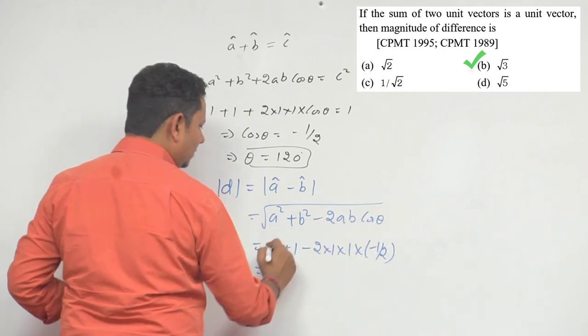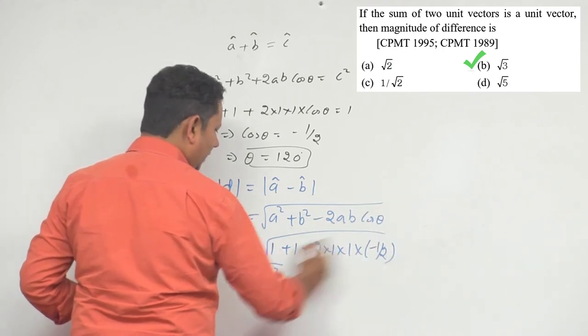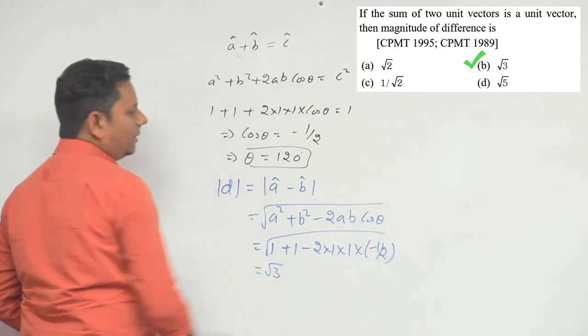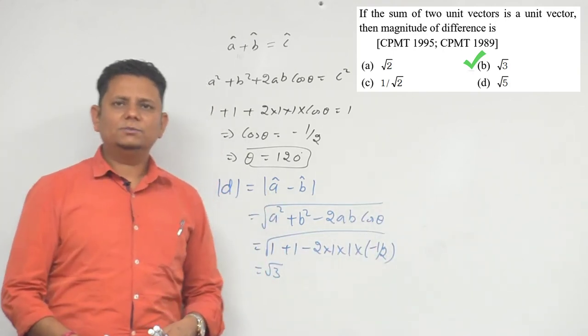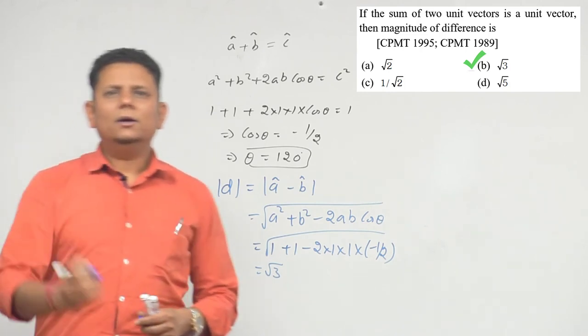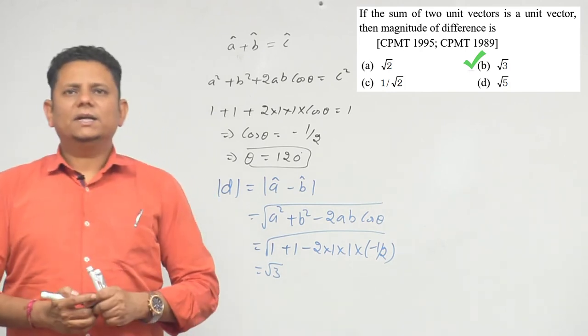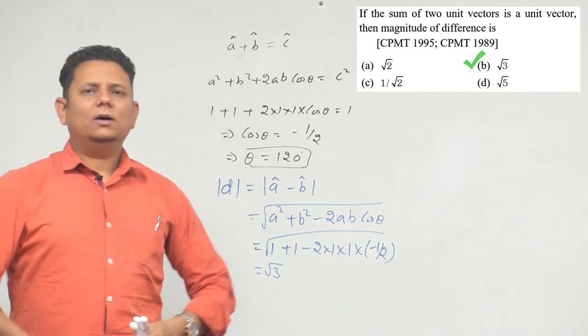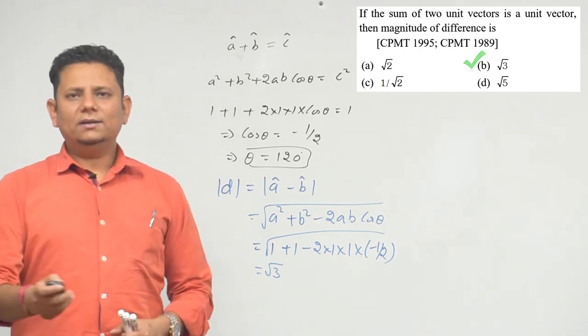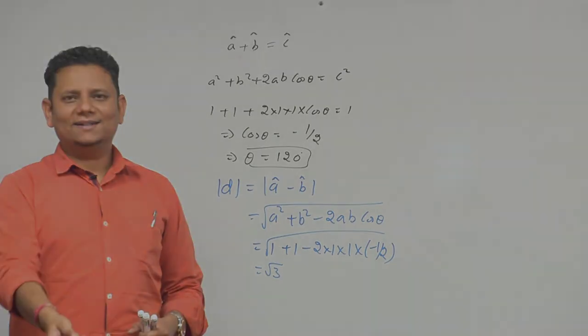इन सब पे under root रहेगा, so आपका difference जो आया, a minus b उसका magnitude होएगा root 3. Based on this हम कह सकते हैं option number B — root 3 — will be the correct answer.